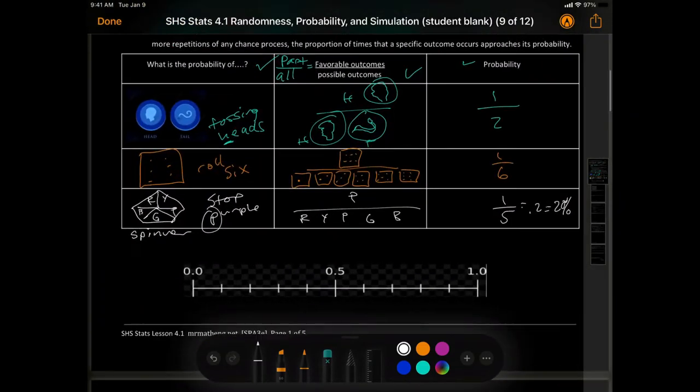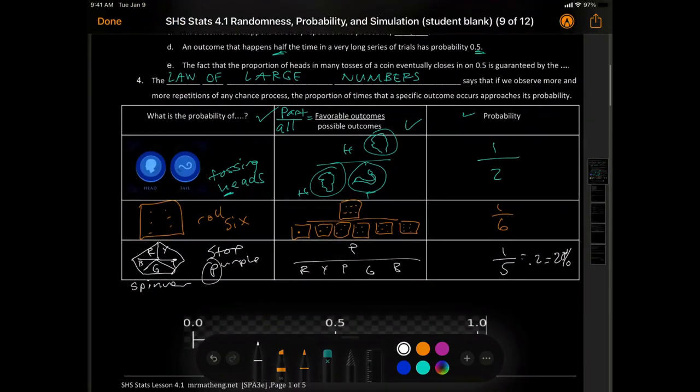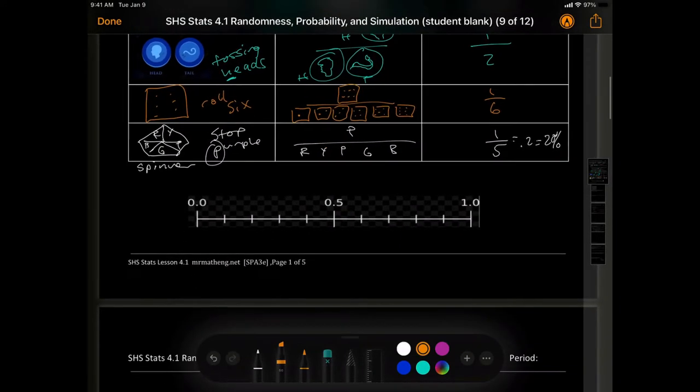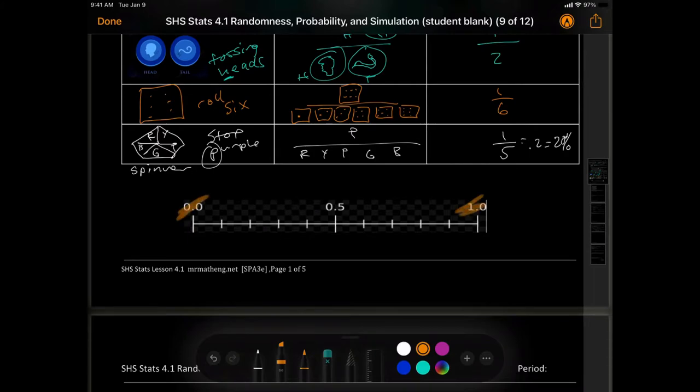Alright, so from above, we said, a 0 and a 1. Well, here's my 0 and here's my 1. So, a 0 means it is impossible. And over here, it is certain. And, of course, at 50 or 50%, you have an even chance.